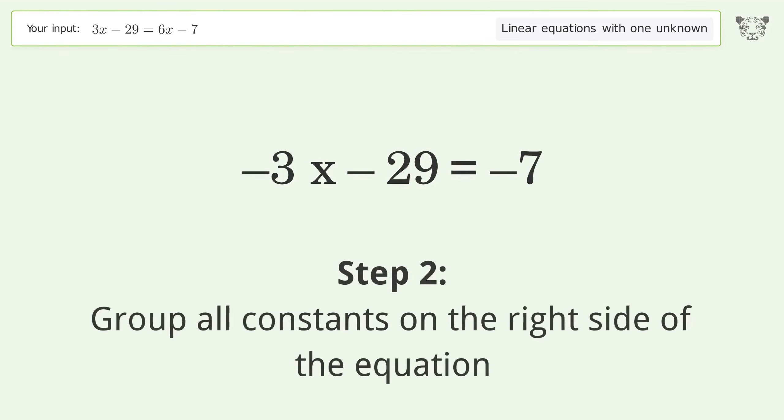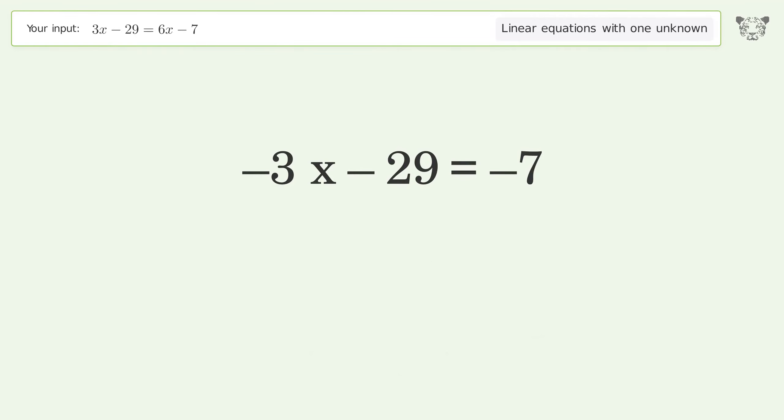Group all constants on the right side of the equation. Add 29 to both sides. Simplify the arithmetic.